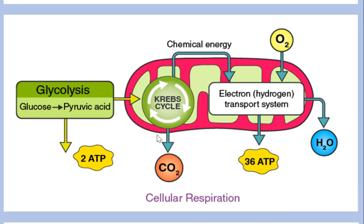The next process is the Krebs cycle, which occurs within the mitochondria. In this process, CO2 is released from the cells in the presence of oxygen, and chemical energy is produced.